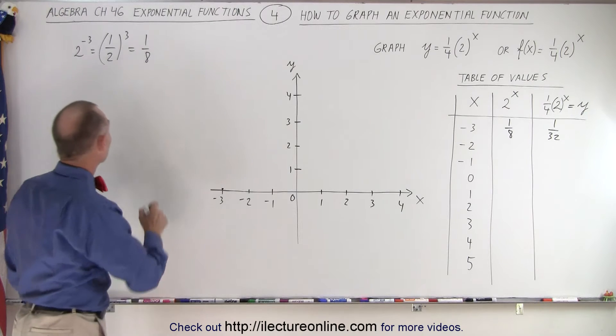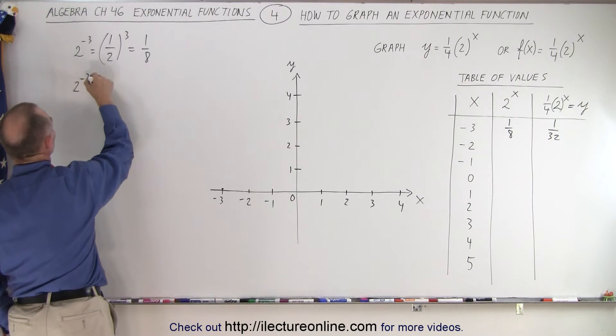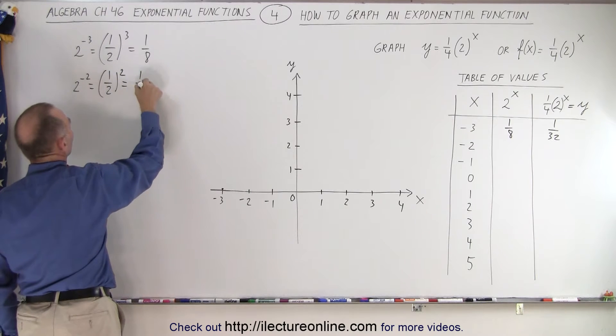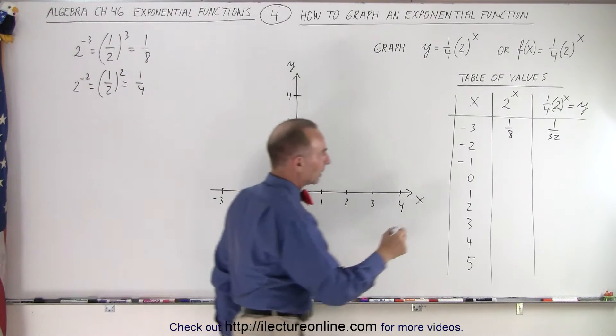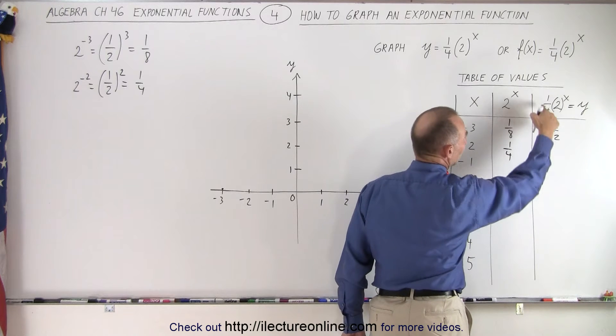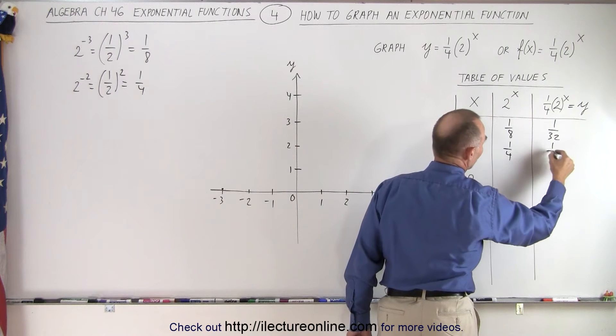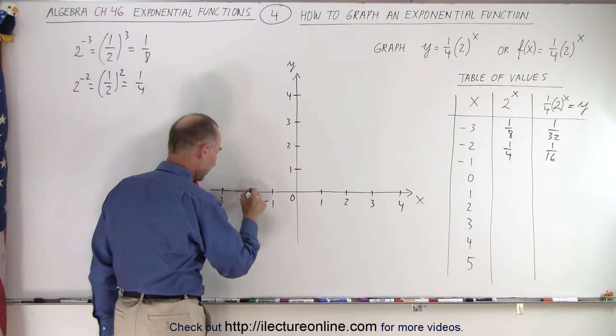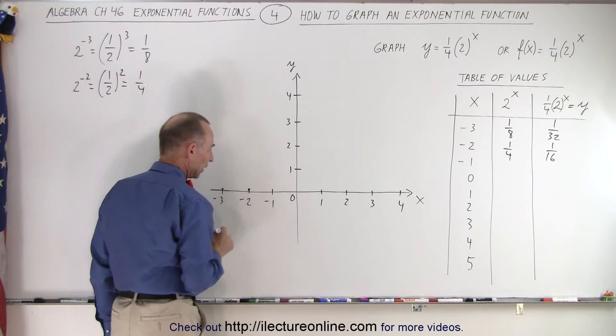How about negative 2? We have 2 to the negative 2 power, which is 1 over 2 to the positive 2 power, which is 1 over 4. Of course, we plug that in here, 1 over 4, and then we multiply times 1 over 4, so we get 1 over 16. You can see it's still a very small number, slightly bigger than what it was over there.